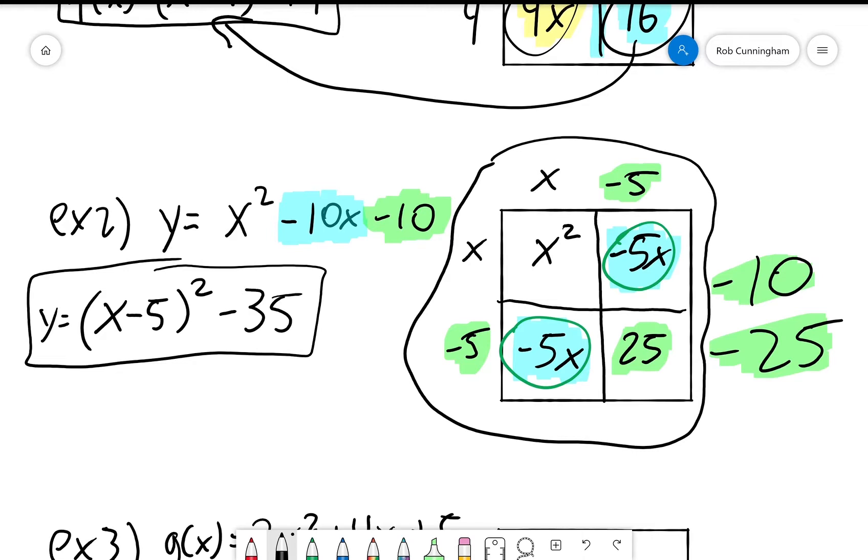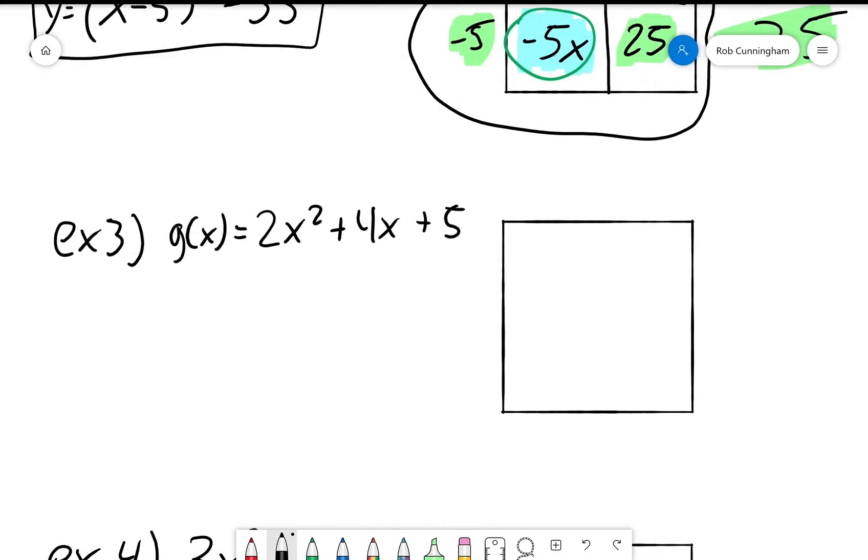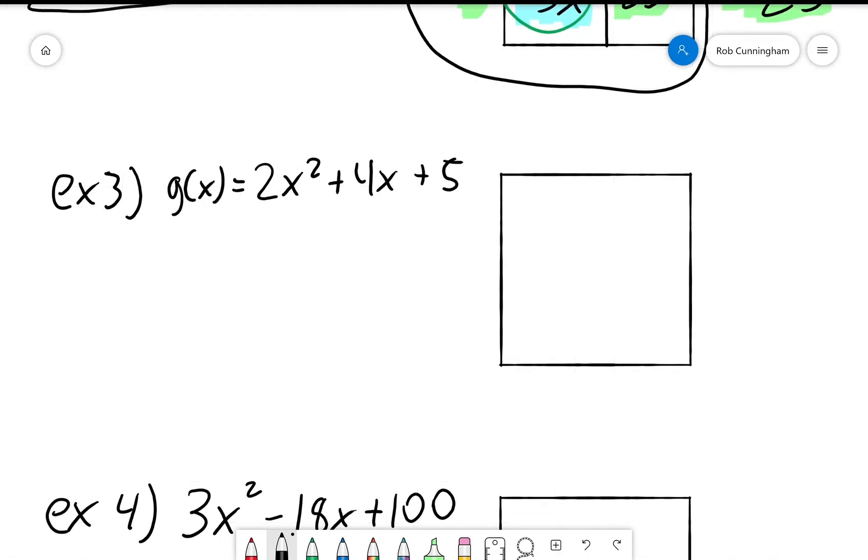And then we have minus 10 and minus 25, which gives us a total of minus 35. Let's do another one. Problem 3. 2x squared plus 4x plus 5. Okay, same deal. Section this off. And I'm going to kind of leave the plus 5 hanging out here for a little bit, and we'll figure out what to do with that later.